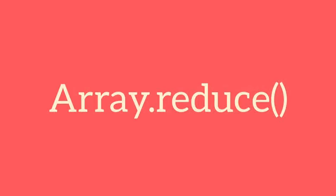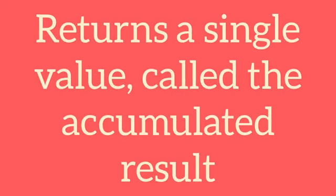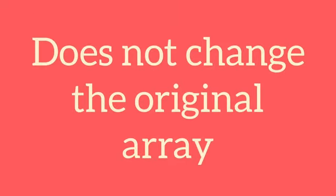The JavaScript array reduce method executes a reducer function for array elements. This method returns a single value, which is like an accumulated result. This method does not change the original array.